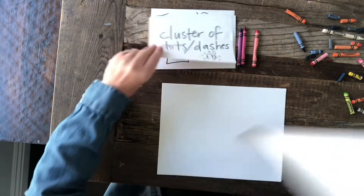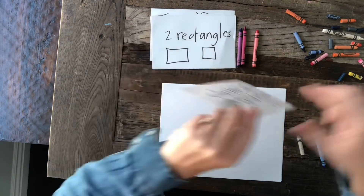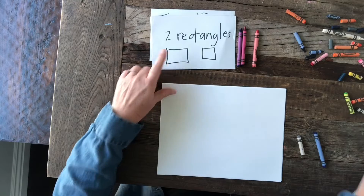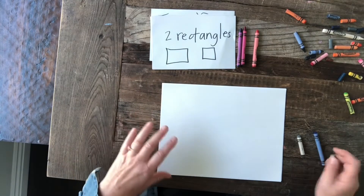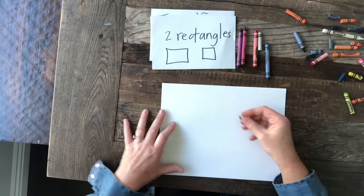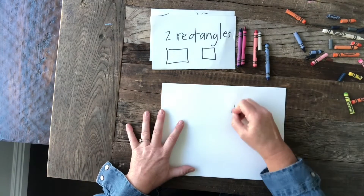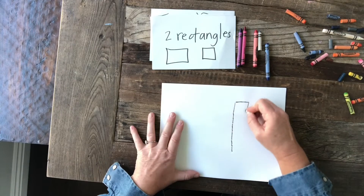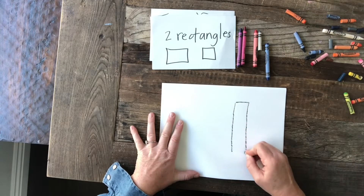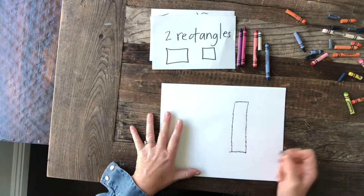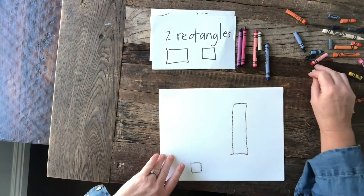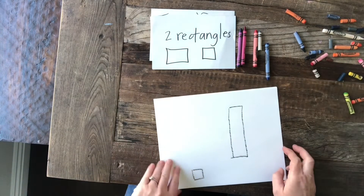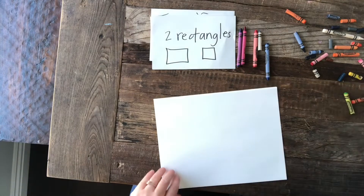Next thing to add is two rectangles. One, two — anywhere you want, any direction you want. It's fine if they overlap.